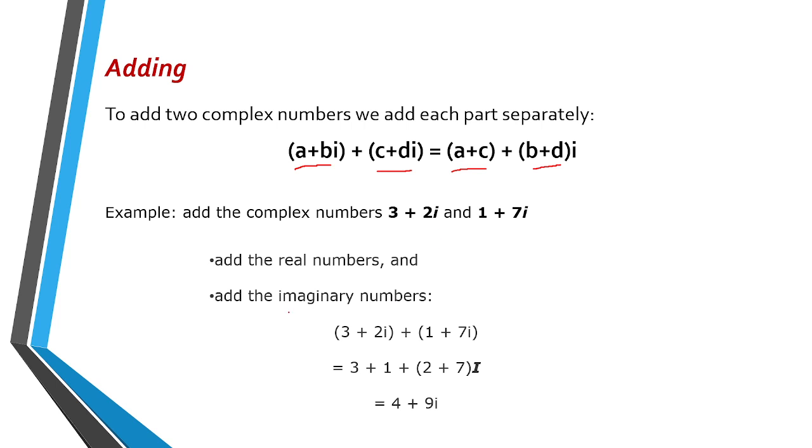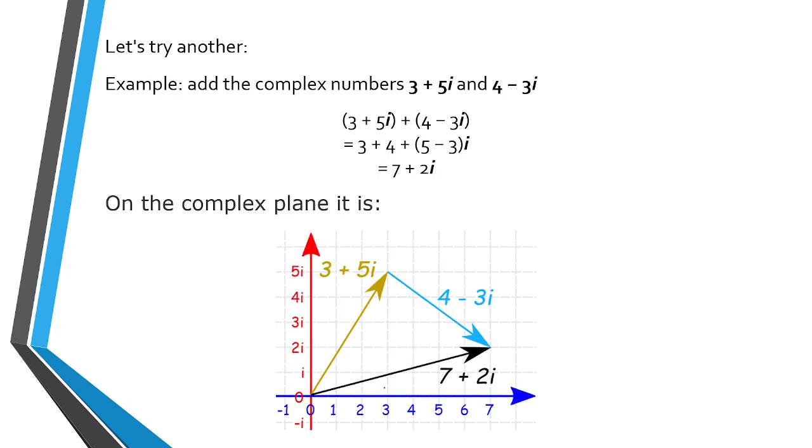So for example, we add the complex numbers 3+2i and 1+7i. First, add the real numbers, so we add 3 plus 1. Next, add the imaginary numbers, in this case we have 2 and 7i. So this is equal to 4 plus 9i. So it's not that complicated. Let's try another example.